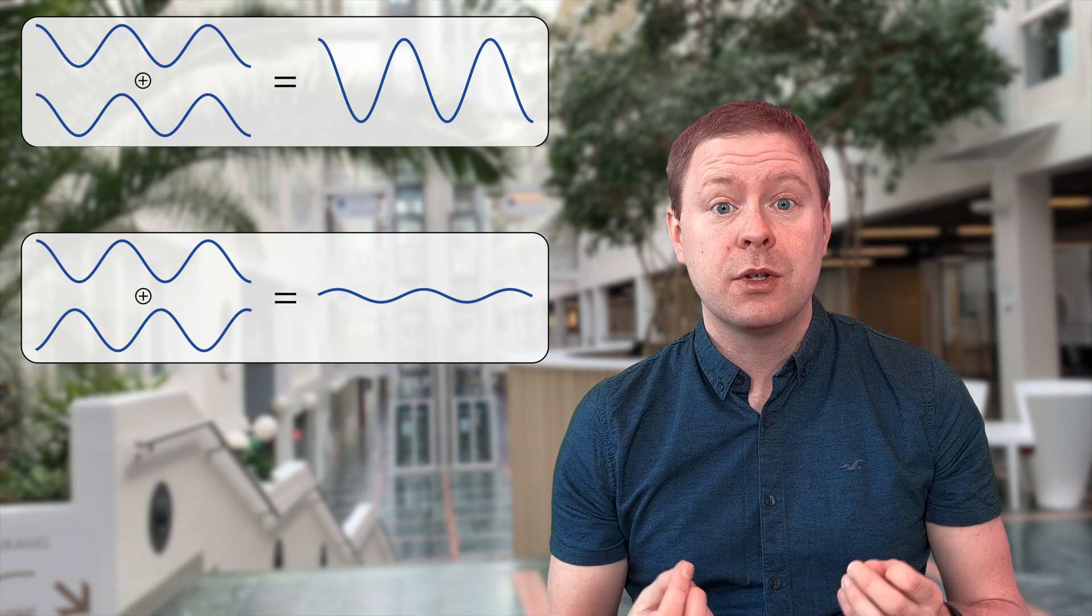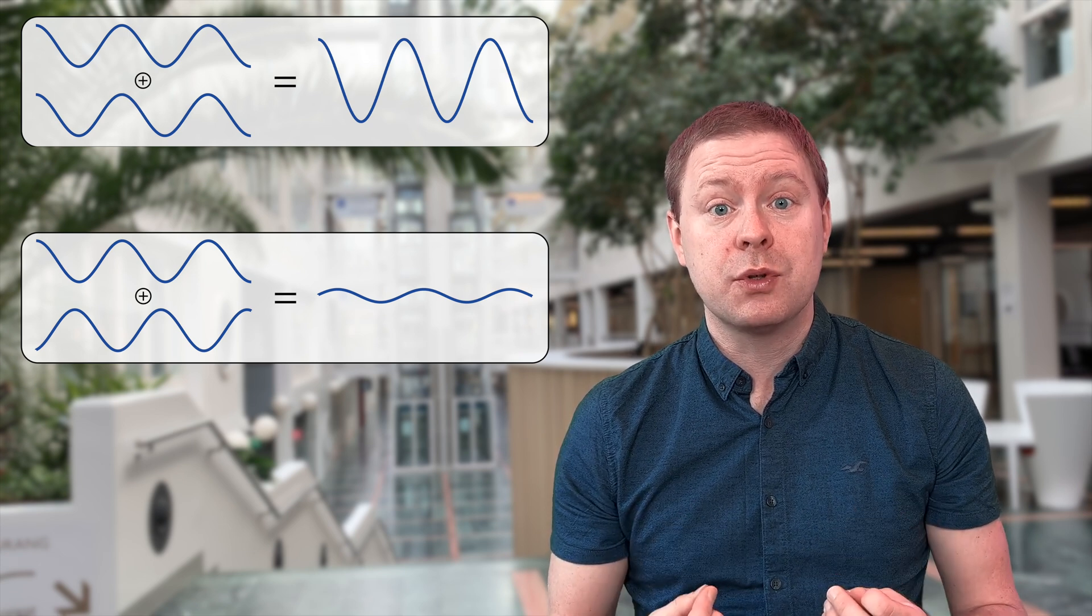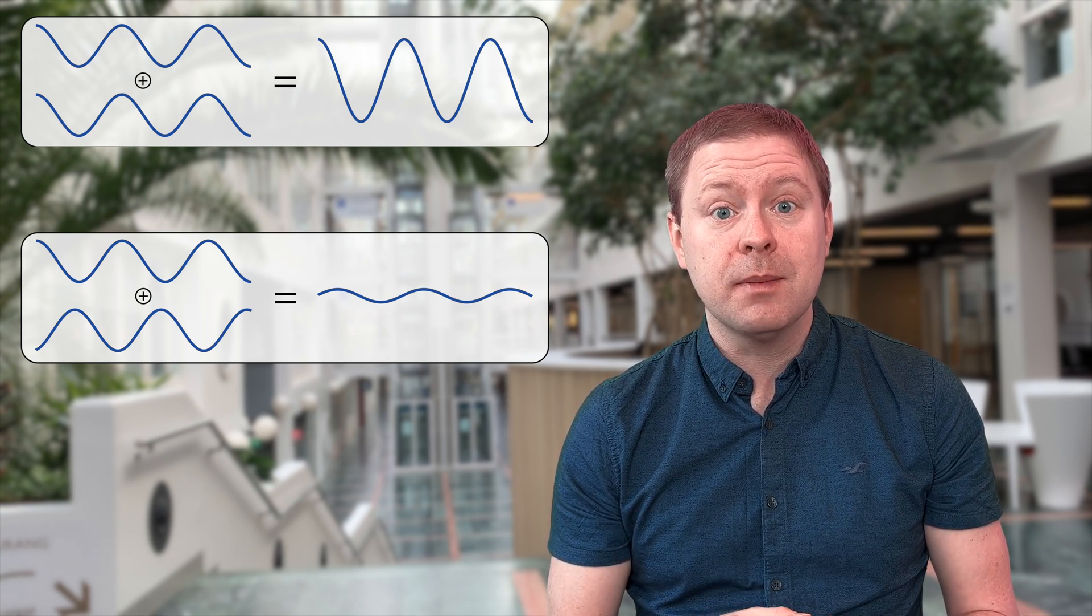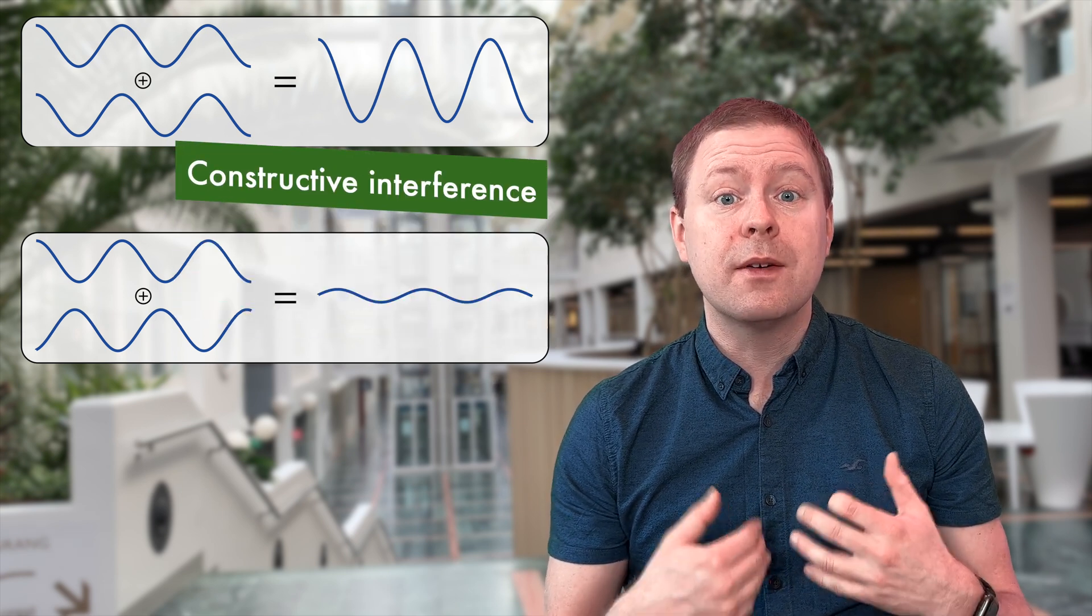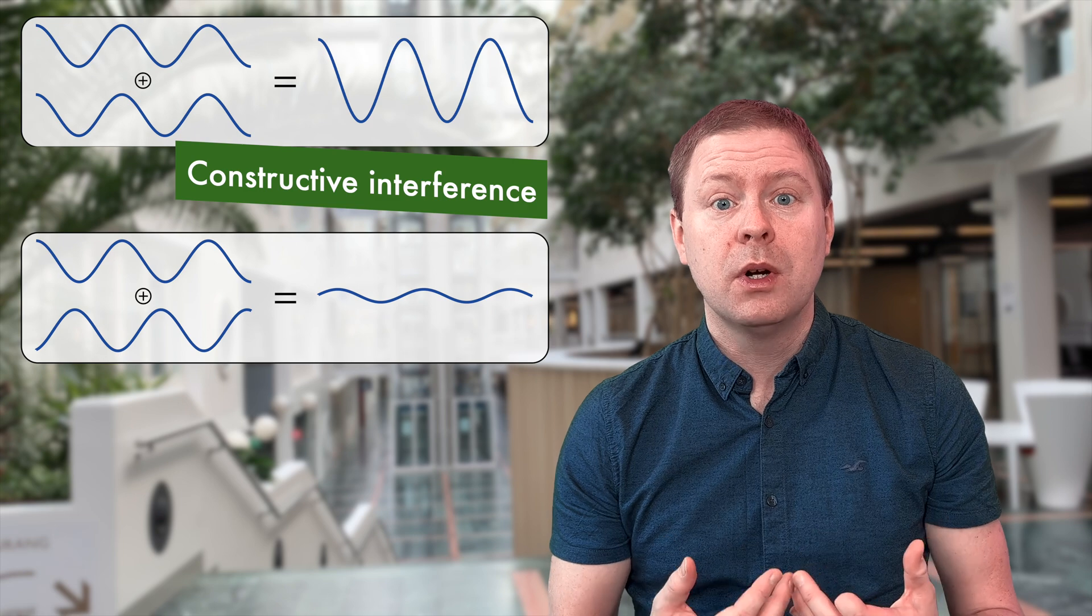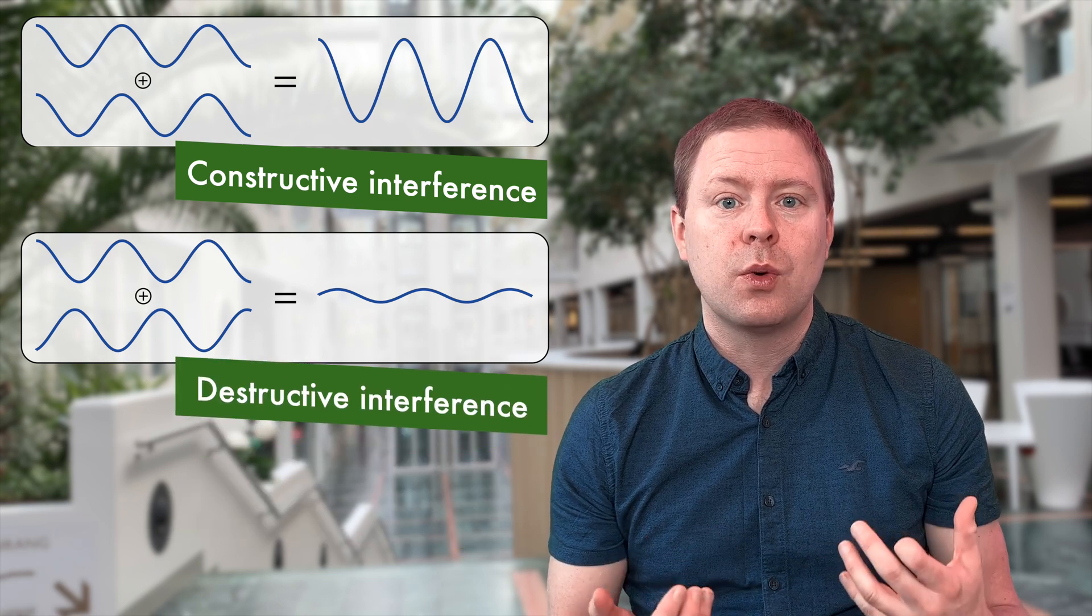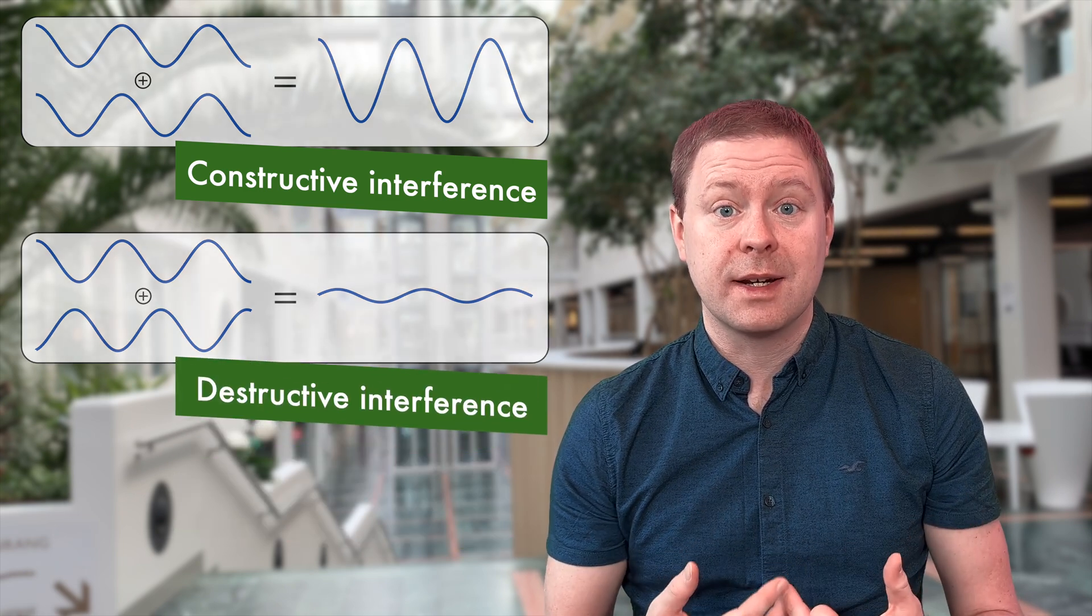We will see how two copies of this signal can be added up during the transmission or reception of a communication system, and this can result in constructive reinforcement of the signal power or destruction so that the signals are canceling each other.